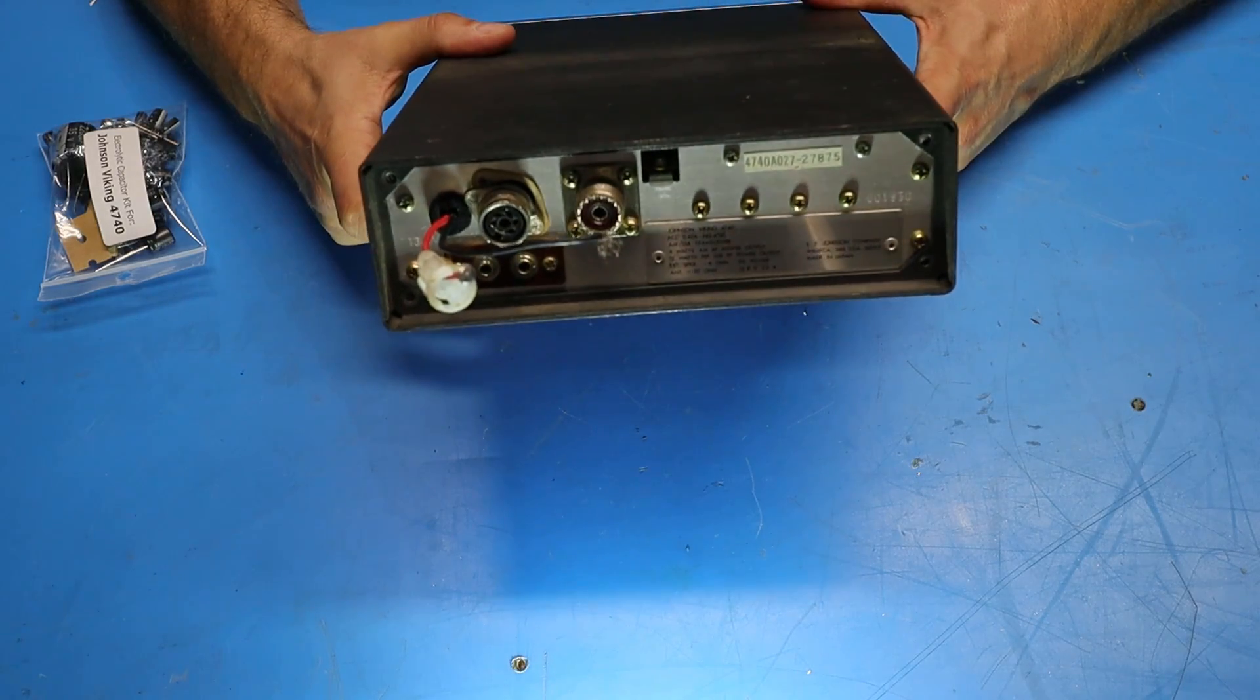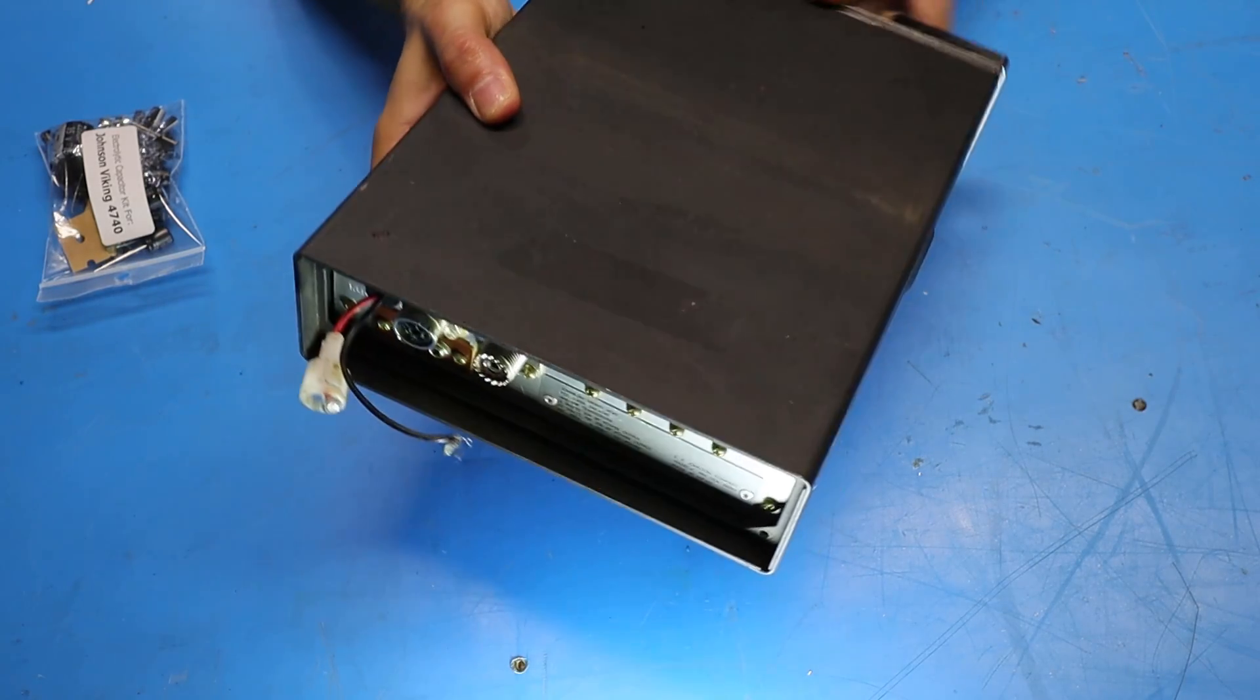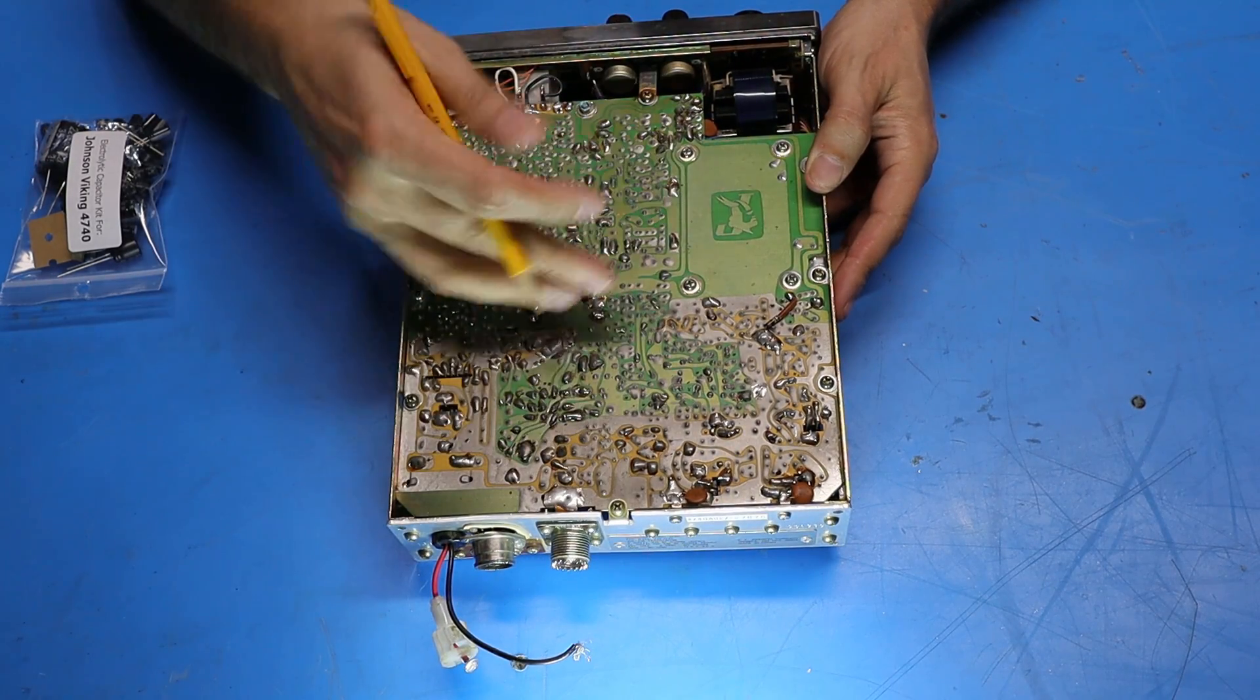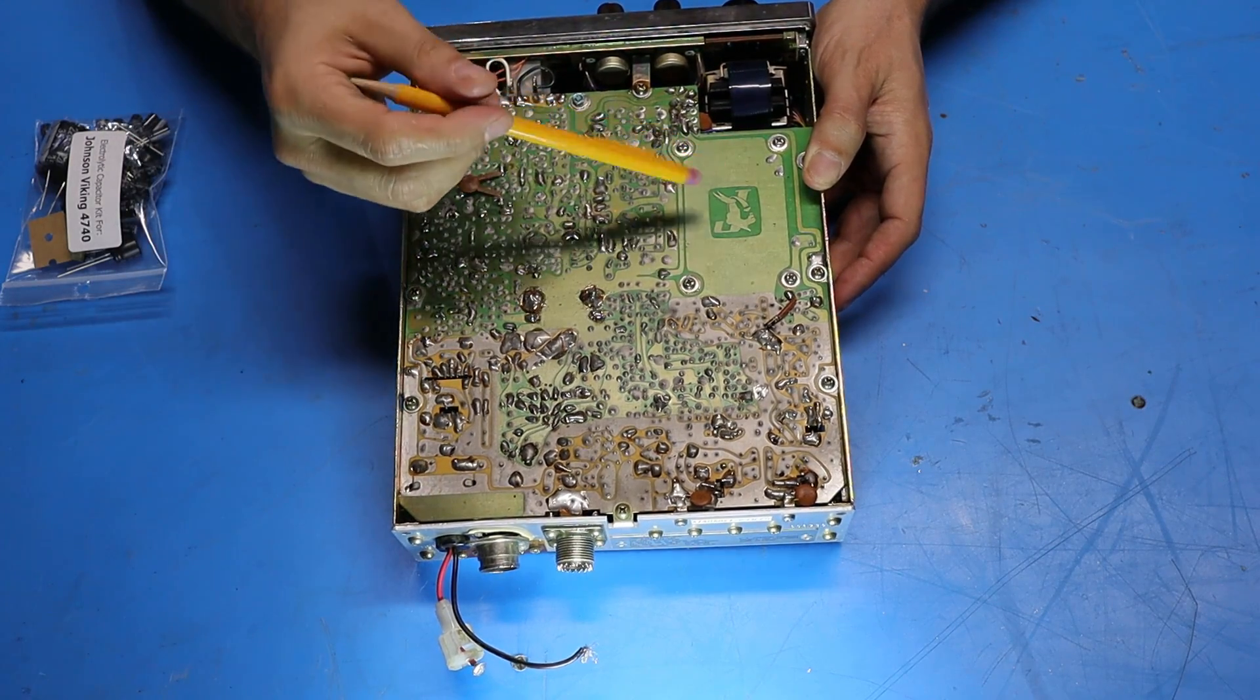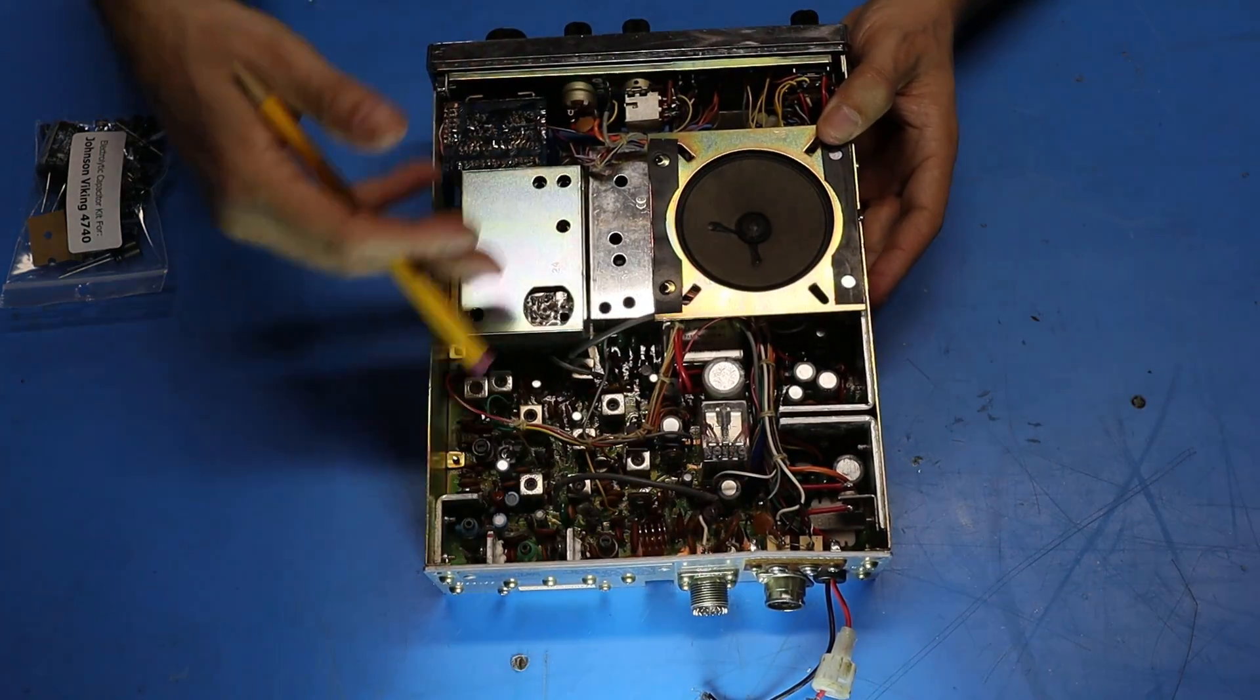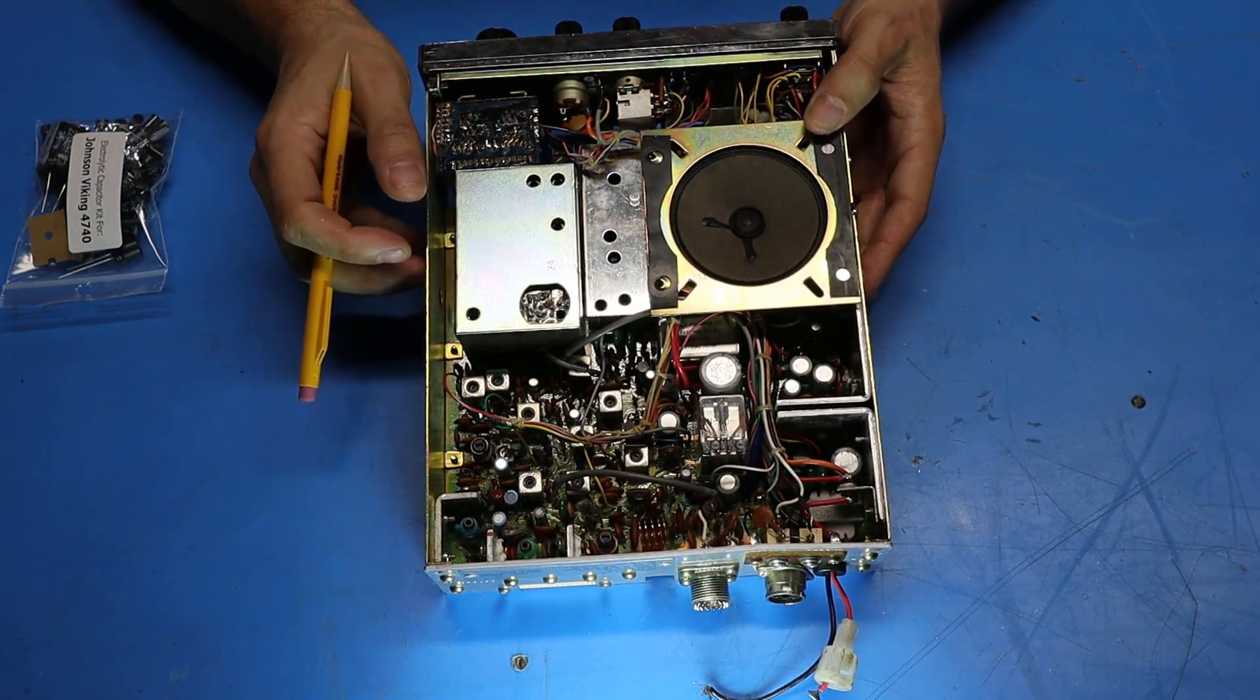I'm going to start by taking the radio apart and I've already removed the four screws that hold the chassis to the cover. So now this will just slide right out. Taking a look at the solder side of the board nothing really remarkable here. It's just an old circuit board. The only thing noteworthy is the Johnson Viking logo etched right into the copper pattern. Here's a look at the component side. Everything here looks pretty clean. Hopefully we don't have any surprises as we start going through this 40 year old radio.